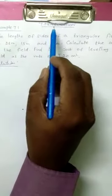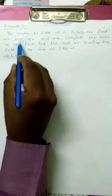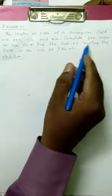Okay. Seventh lesson, mensuration. Example 7.1. The lengths of sides of a triangular field are 28 meters, 15 meters, and 41 meters. Calculate the area of the field. Find the cost of leveling the field at the rate of rupees 20 per meter square.